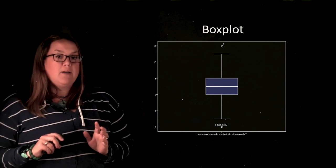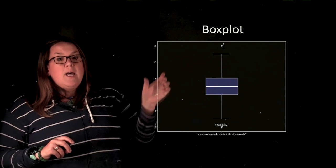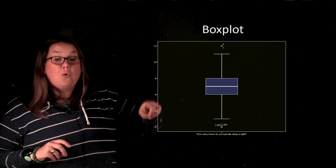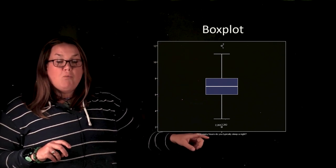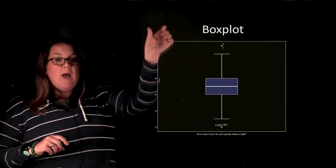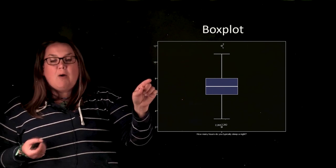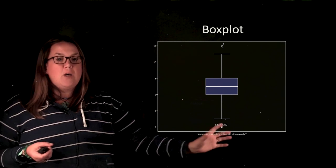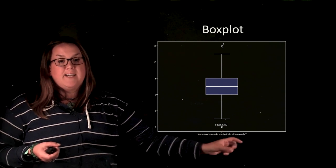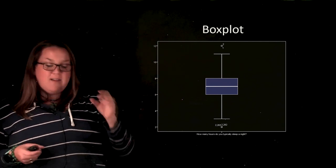Now for a box plot, it can be represented either vertically like you see here, or it can be represented horizontally. In this axis, this y-axis today, this is telling you the actual measurement. So here we have what the variable is and that's how many hours do you typically sleep a night. And then over here with the y-axis, this is telling you the number of hours. So that means this location here, that would be eight hours.